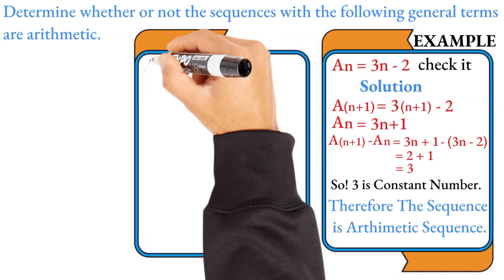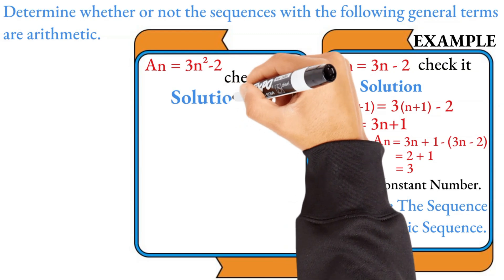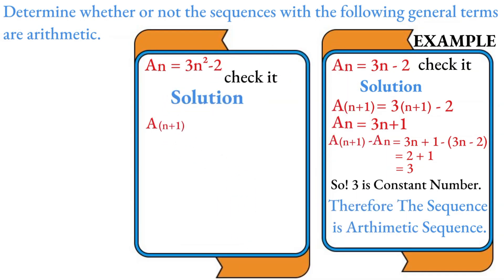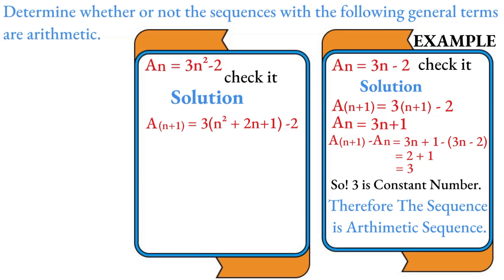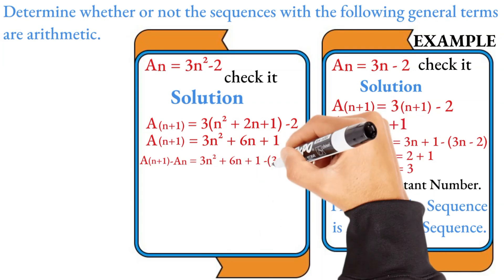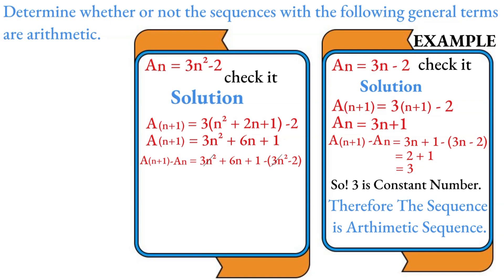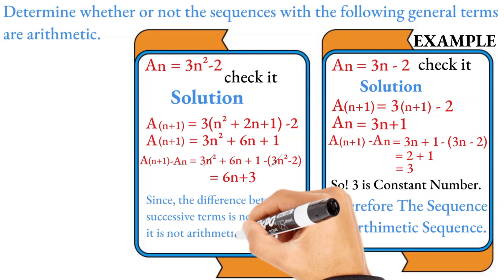For part 2, let An equals 3n squared minus 2. Then A(n+1) equals 3(n+1) squared minus 2, and since (n+1) squared equals n squared plus 2n plus 1, we get A(n+1) equals 3n squared plus 6n plus 3 minus 2, which is 3n squared plus 6n plus 1. The difference between A(n+1) and An equals 6n plus 3, which is not a constant number. So the difference between successive terms is not constant — it is not an arithmetic sequence.